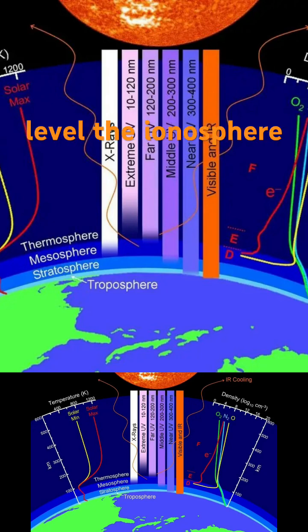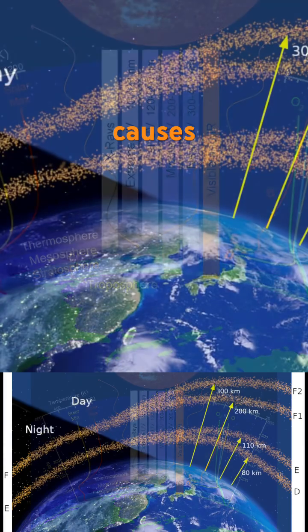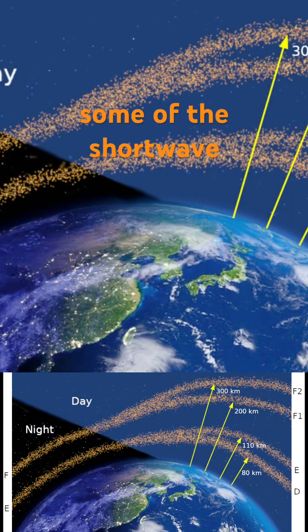At the highest level, the ionosphere refracts the entire shortwave spectrum on your shortwave radio. At the lower levels, the sun's ionization causes absorption of some of the shortwave frequencies.